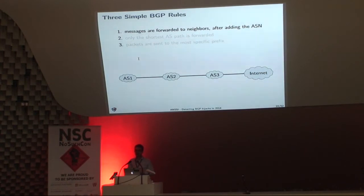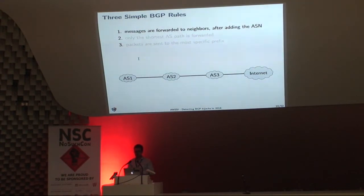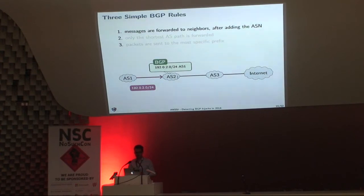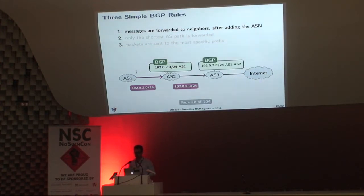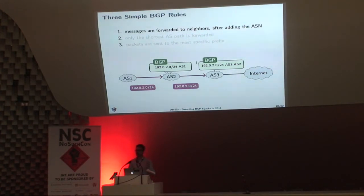BGP is complicated both in specification and in operation. Today we decided to discuss only three really simple BGP rules. The first rule says that messages are forwarded to neighbors after adding the autonomous system. Here, AS1 sends an update message, AS2 receives and processes it — its routing table says that to reach IPs in the /24 prefix, packets will be sent to AS1. When AS2 forwards the update to AS3, its routing table says packets will be sent to AS2, then to AS1.